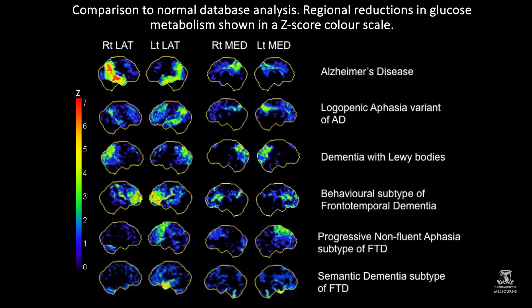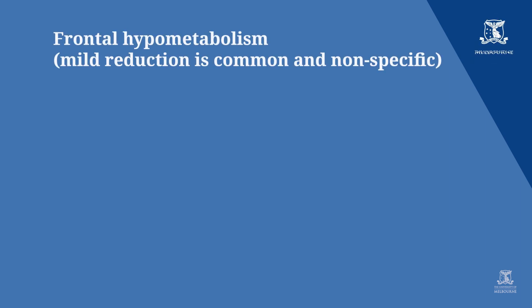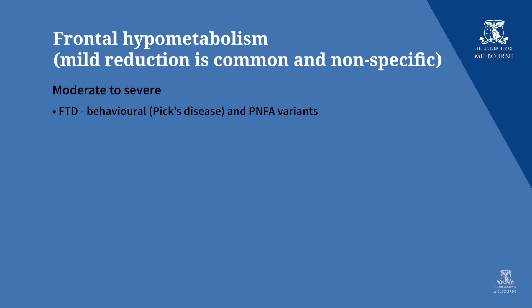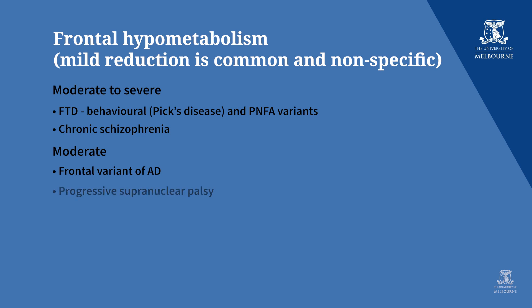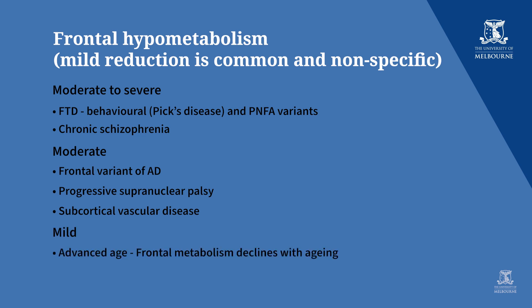Progressive non-fluent aphasia variant of frontotemporal dementia shows hypometabolism in the dorsal left frontal cortex, which is Broca's area. Semantic dementia subtype of FTD shows hypometabolism in the anterior temporal lobe. Brain FDG-PET can help diagnose not only Alzheimer's disease but other neurodegenerative conditions that may present with psychiatric symptoms. Frontal hypometabolism, if moderate to severe, suggests frontotemporal dementia or chronic schizophrenia; it's moderately reduced in variants of Alzheimer's disease, progressive supranuclear palsy, and subcortical vascular disease, and mildly reduced with advanced aging, ethanol excess, depression, and obstructive sleep apnea.